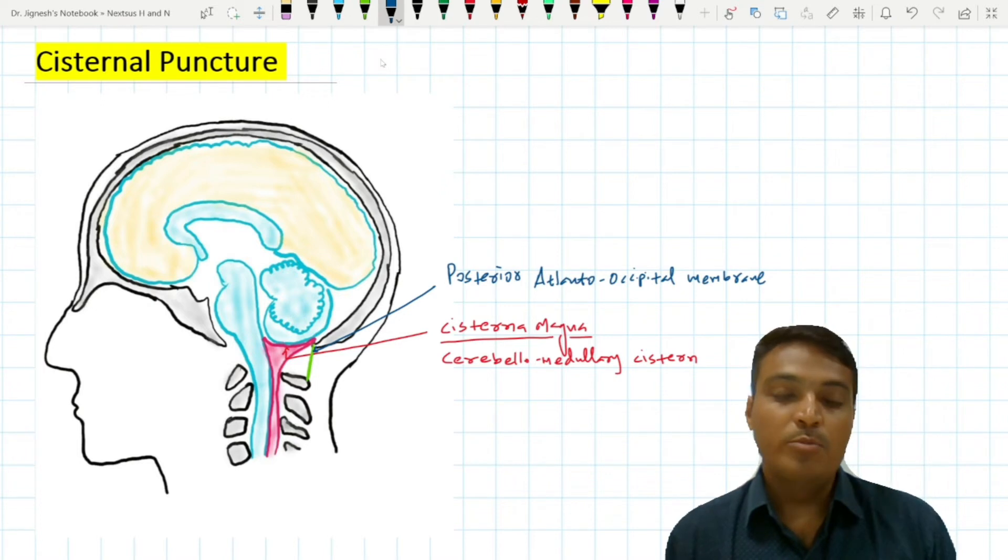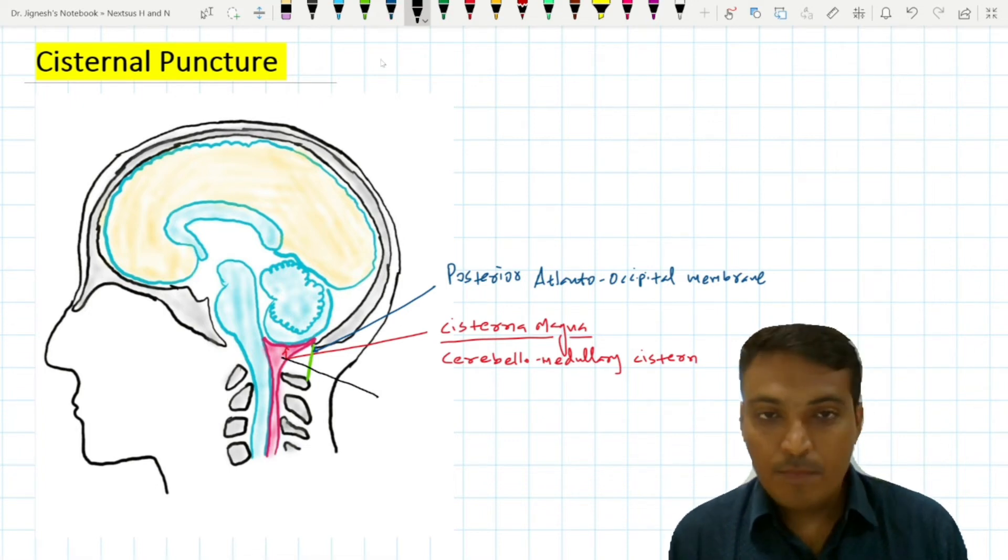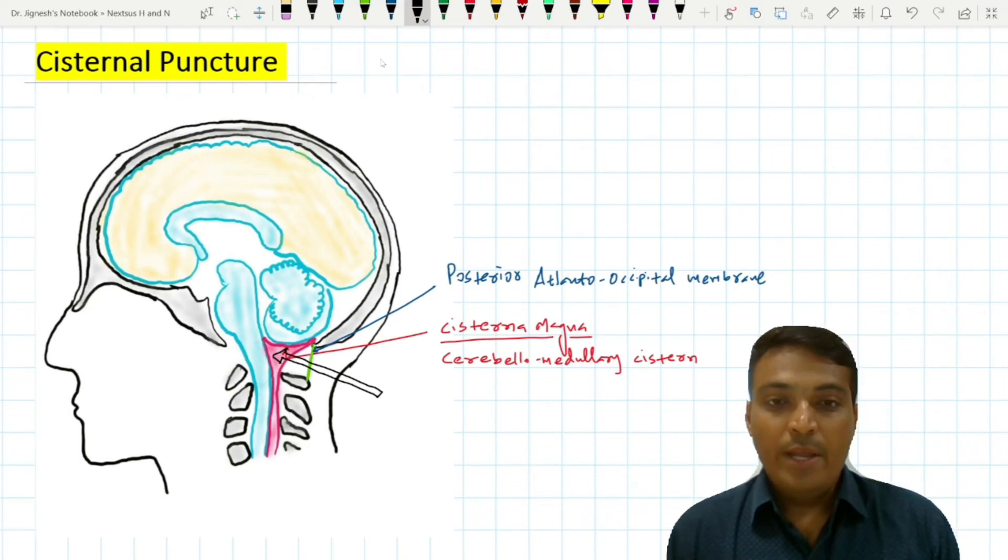In case of lumbar puncture failure, anesthesiologists, neurosurgeons, or those performing neurodiagnostic procedures enter the needle through this posterior atlanto-occipital membrane to reach the cisterna magna. The needle should be inserted through the posterior atlanto-occipital membrane upward and forward.